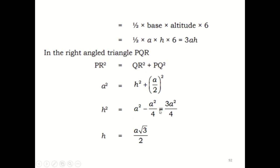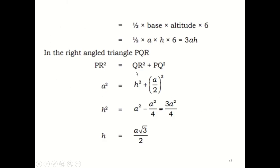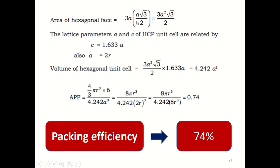Now look at the right-angle triangle PQR. By Pythagoras: PR-squared equals PQ-squared plus QR-squared. Here PQ is a/2 and QR is H, so PR-squared equals H-squared plus (a/2)-squared. Rearranging: H-squared equals a-squared minus a-squared/4, which gives 3a-squared/4. Therefore H equals a times root-3 divided by 2. So the area of the hexagonal face is 3a times H, which equals 3a times (a root-3 / 2), giving 3a-squared root-3 over 2.